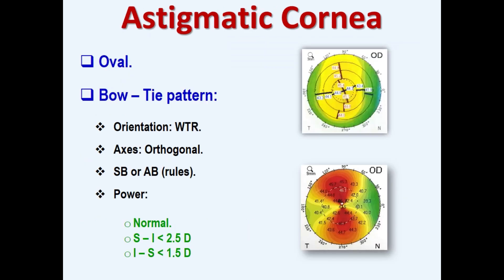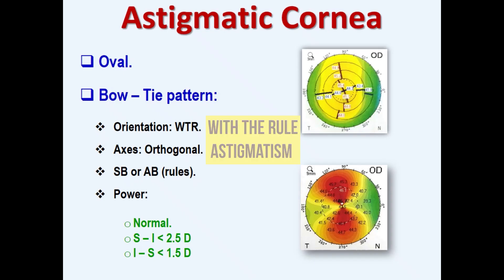Astigmatic cornea. A regular corneal astigmatism is orthogonal, that's to say its major axes are perpendicular to each other. Also, it can be fully corrected with a cylinder or sphero-cylinder lens. Most often, the corneal steep axis is vertical, that's to say with-the-rule astigmatism. Its magnitude or power is within normal limits.